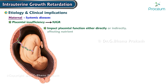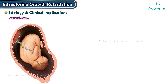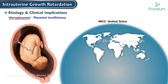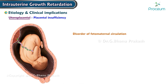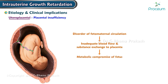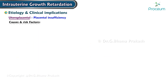Systemic diseases that lead to placental insufficiency can result in intrauterine growth restriction, impacting placental function either directly or indirectly, affecting nutrient and oxygen exchange between the mother and fetus. Uteroplacental insufficiency is the most common cause of intrauterine growth restriction in the United States, characterized by a disorder of fetal-maternal circulation leading to inadequate blood flow and substance exchange, resulting in metabolic compromise of the fetus.